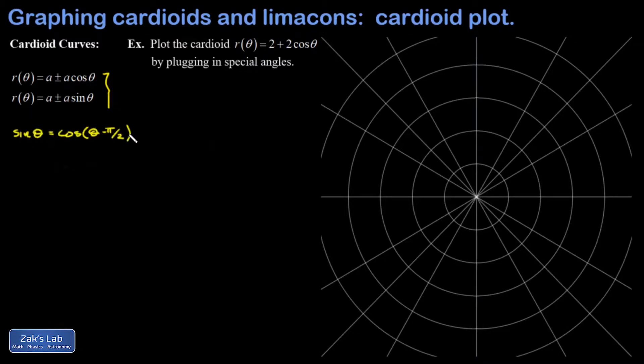We can see this in the trig identity and I made a separate video showing how you can take a cosine cardioid and transform it into a sine cardioid by doing a π/2 rotation. I'll post a link to that.